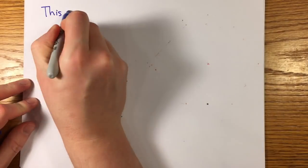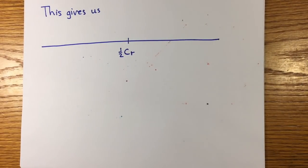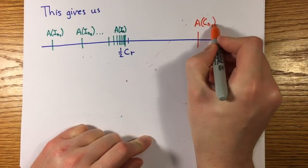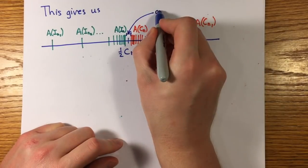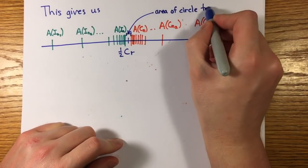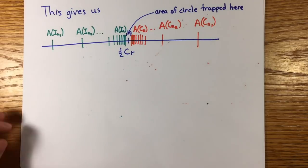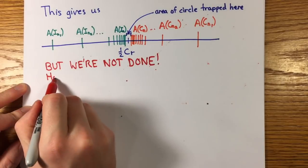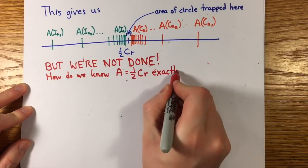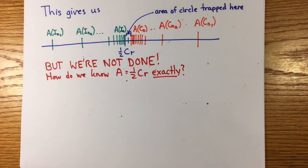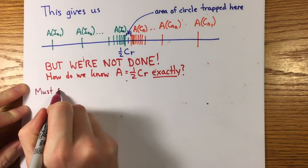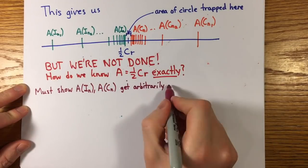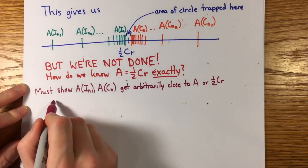So what we have is that the area A of a circle is more than the areas of all inscribed polygons, and less than the areas of all circumscribed ones. It remains to show that this actually forces A to be one half cr, that there's no room in between. This would be true if we could get as close to A from above and below by the areas of regular inscribed and circumscribed polygons, but I'll stress we're not done. Along with showing the inequalities between perimeters and circumferences, this is the other hard part of the proof.